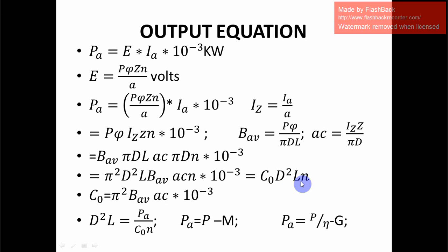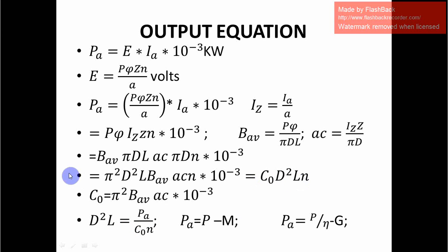The equation now becomes P_A equals C₀·D²·L·n. This is the output equation of DC machines, derived from three basic relationships: the EMF equation, specific magnetic loading, and specific electric loading. Rearranging gives D²·L equals P_A divided by C₀·n, where D is the diameter and L is the length — these are the main dimensions.